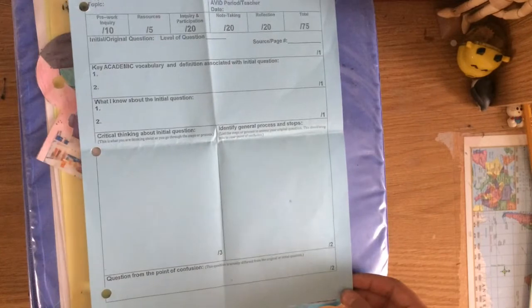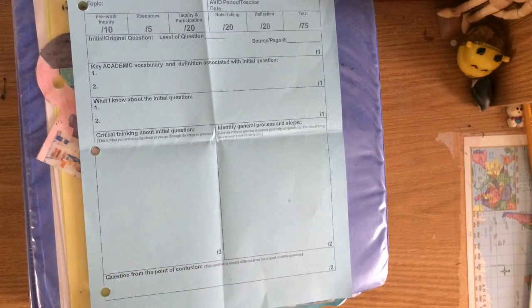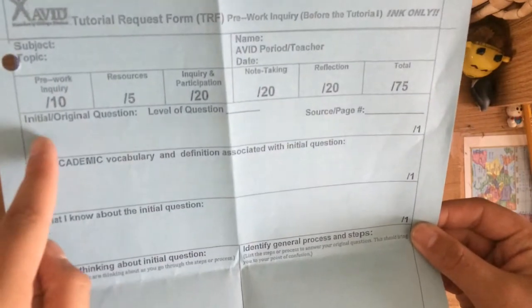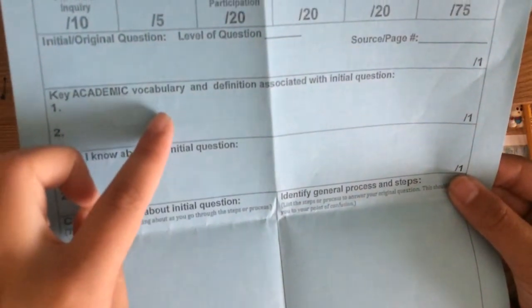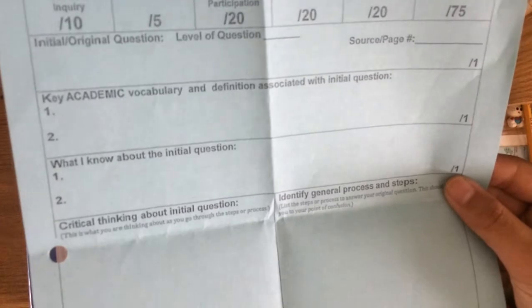TRFs normally help students with a point of confusion in a problem. So you would start off by writing the original question. Remember to source where you got the problem from. Then you would write down key academic vocabulary relating to the original question. You would then write down what you know about the initial question. Then, you would write down how you would go about solving that question. Then, you would write down general processes and steps to solving your problem. Finally, you would write down your point of confusion of the problem.